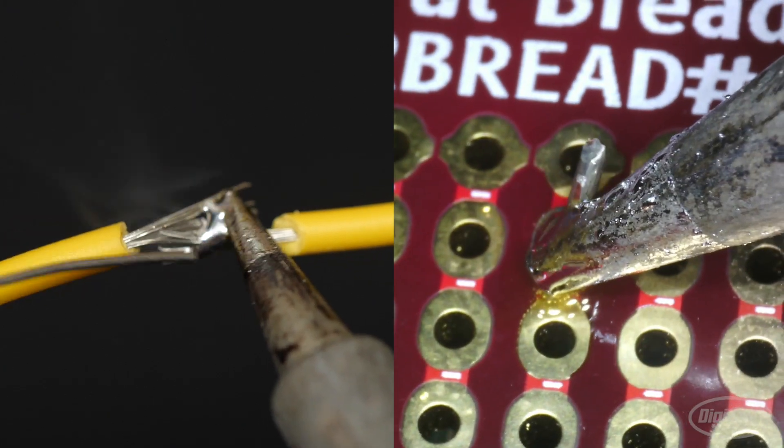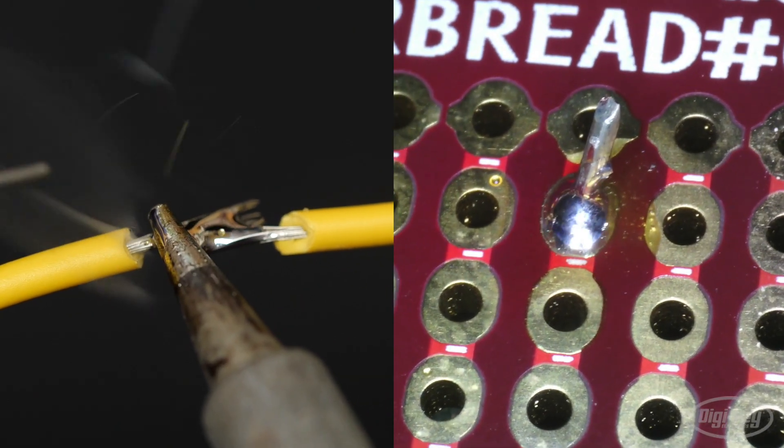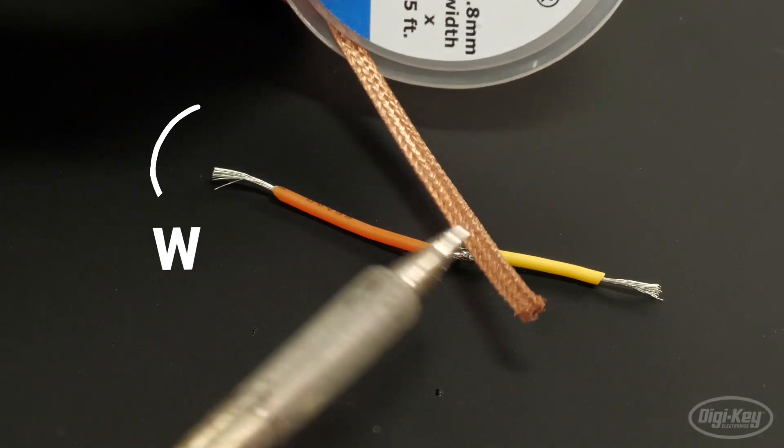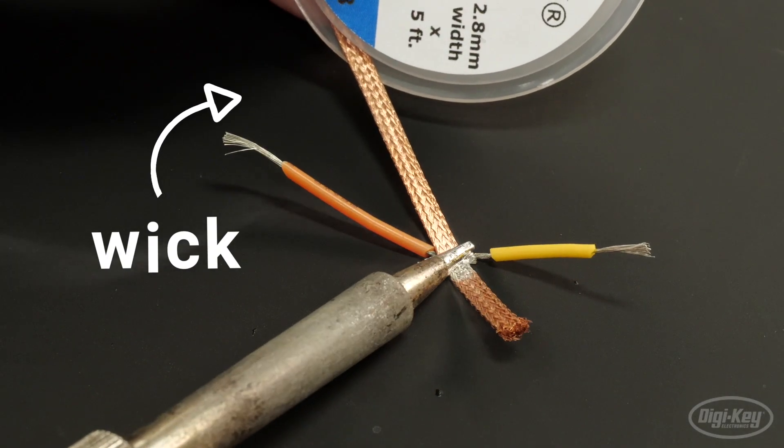You can reheat the solder joint to correct a cold solder. You can also reheat your joint to undo the connection, which can be easier sometimes if the excess solder is first removed through wicking or suctioning it away.